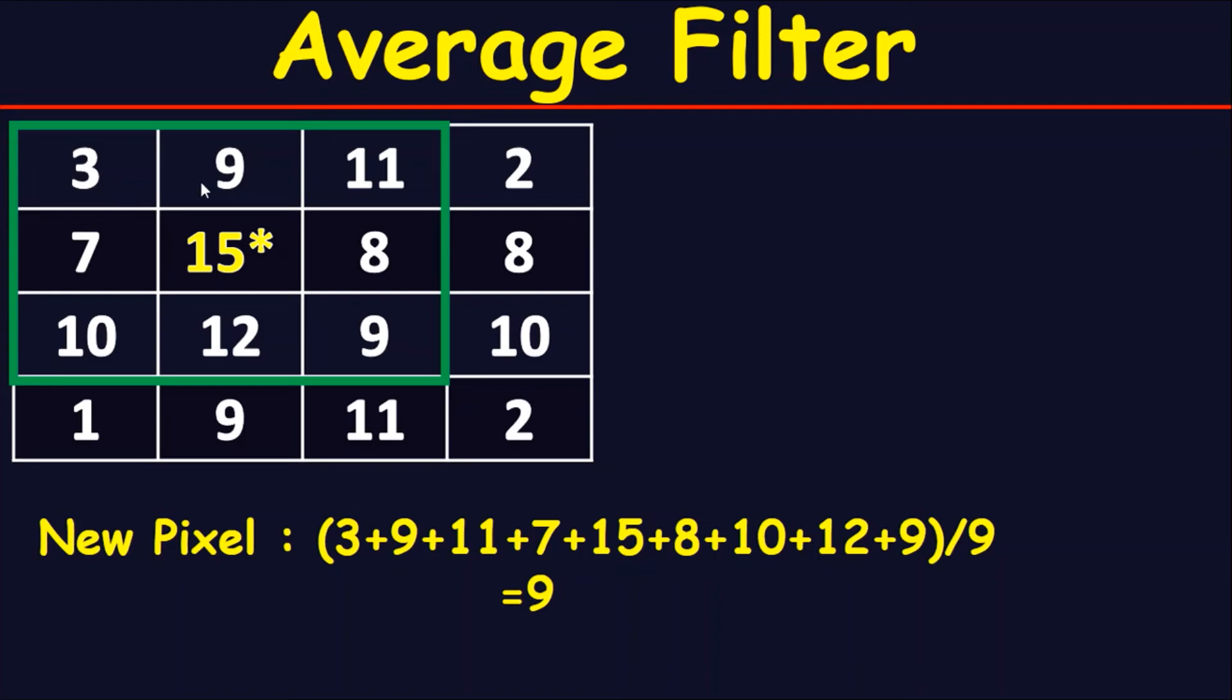In this 3x3 matrix we have nine pixels, so divide by nine. This will give you 9.3333. However, choose only the integer number, so choose the nine only. Thank you for watching.